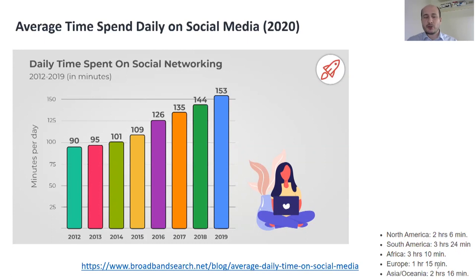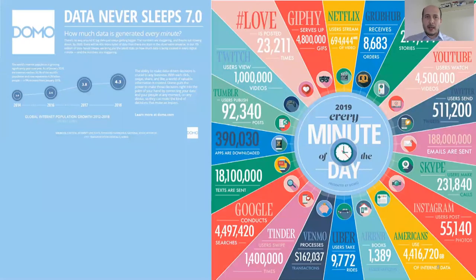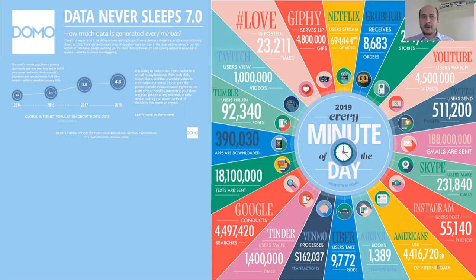Last year in 2019, an average person was spending more than 150 minutes per day on social networking. The data never sleeps. In a single minute, we can see how much data is generated across different social platforms — YouTube, Instagram, Twitter, Skype, Airbnb, Uber, and Tinder are among the most used. The amount of data stored in recent years has been growing and incrementing.